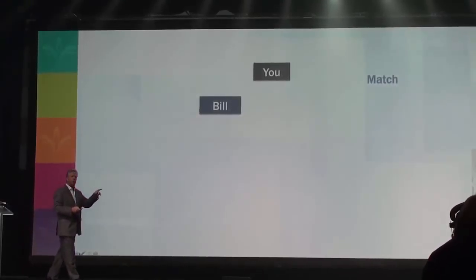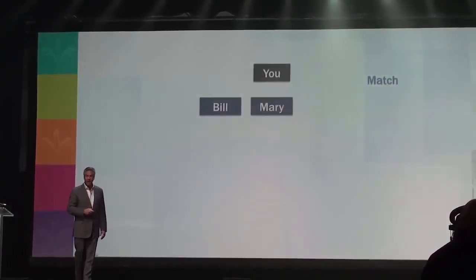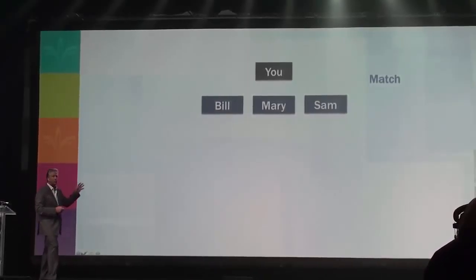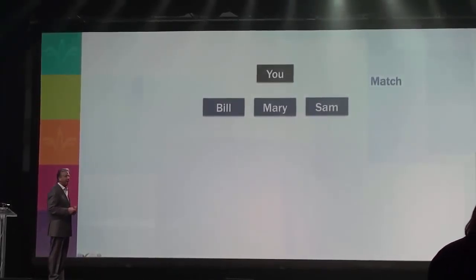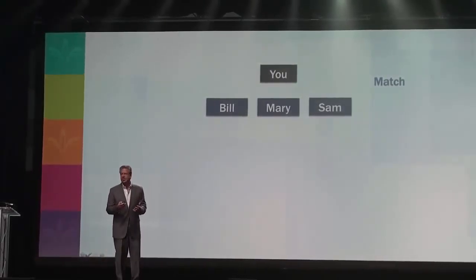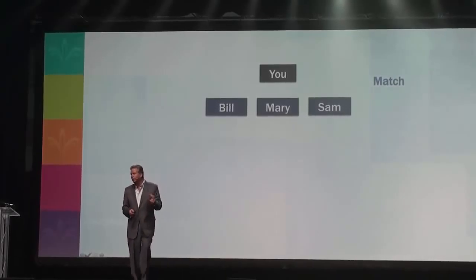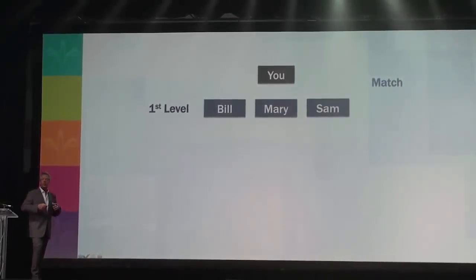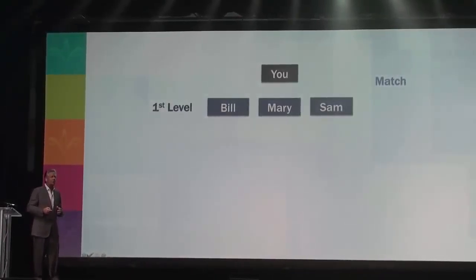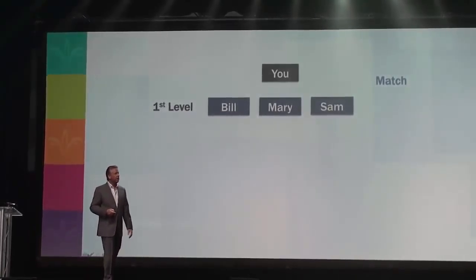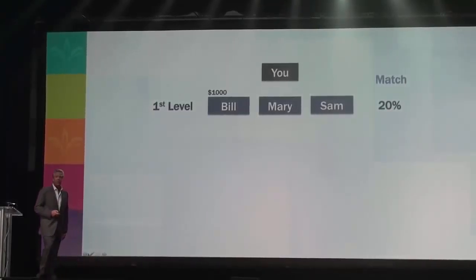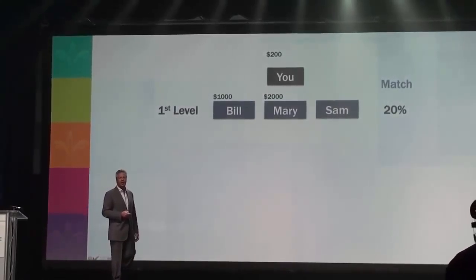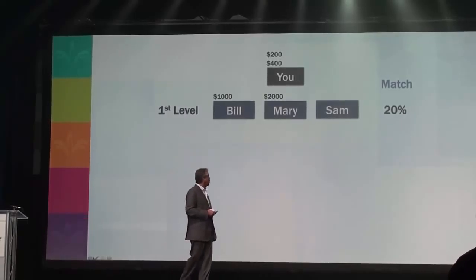In our last example, the people you personally sponsored were Bill, Mary, and Sam. They're aligned on your first level to calculate your match money. Bill's out building his left and right team, making $35, $35, $35. The company pays you a 20% match on whatever Bill earns in team building every week. If Bill makes $1,000 for the week, you get $200. Mary makes $2,000 — you get $400. Sam makes nothing — you get nothing.